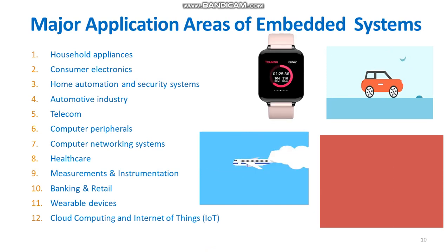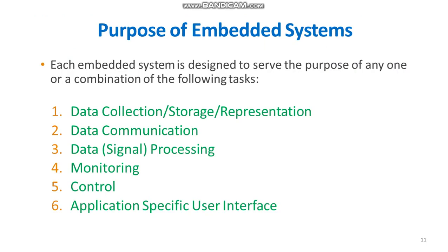These are the few major application areas of embedded systems. Moving on to the purpose of embedded systems. Each embedded system is designed to serve the purpose of any one or a combination of the following tasks. The first one is data collection or storage or representation. Next is data communication. Next, data or signal processing, monitoring, control. And next, the application specific user interface. Let us see one by one with an example each.